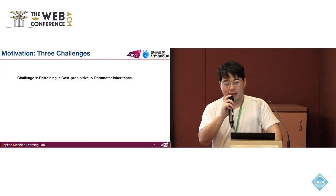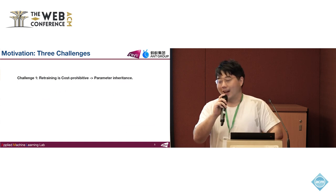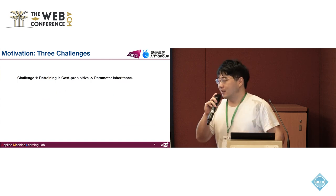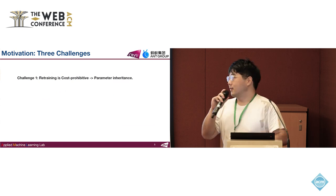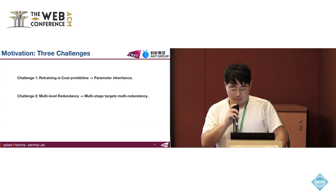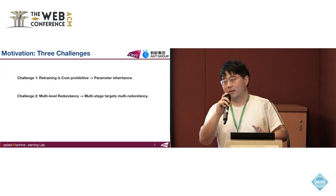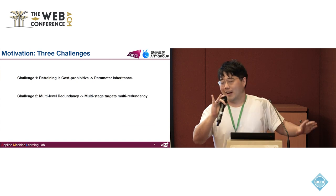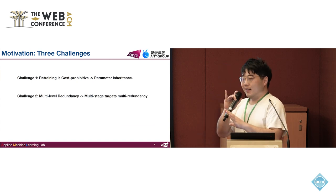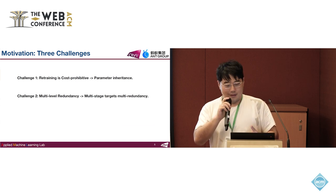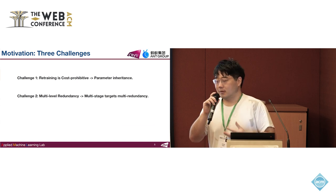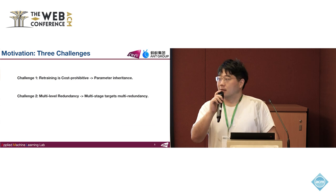There are three challenges for compressing the models. The first is that retraining is cost-prohibitive, so we need to use parameter-inheriting strategies in compression. Also, the redundancy of large models is multi-level because the model is so large — redundancy is everywhere. So we need to identify where the redundancy is and use a multi-stage strategy.